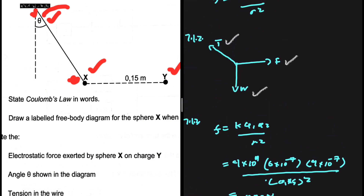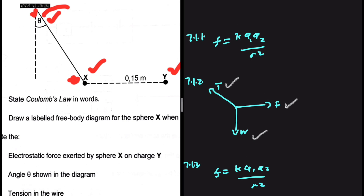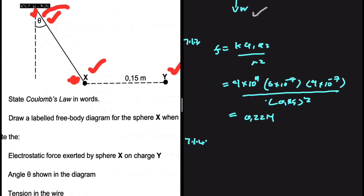Going back to our free body diagram — our sphere is stationary. That tells us that the weight and the y-component of the tension are balanced, and the electrostatic force and the x-component of the tension are balanced. So Ty equals the weight because our sphere is stationary. Ty is the tension multiplied by cos of theta, since our angle is between the y-axis and the tension. This equals the weight.